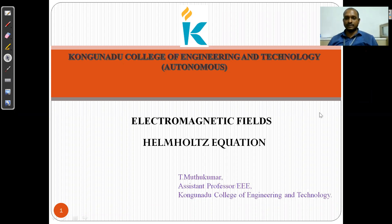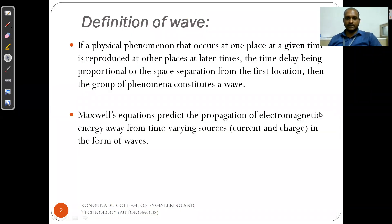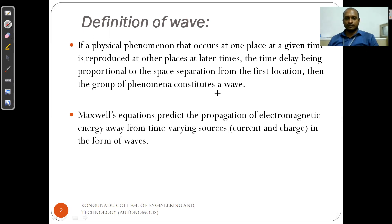This is also called the three-dimensional wave equation. Before going to discuss the wave equation, what is meant by a wave? If a physical phenomena that occurs at one place at a given time is reproduced at other places at a later time, with the time delay proportional to the separation between the first and second locations, that group of phenomena is called a wave. The group of information travelling from one place to another is called a wave.